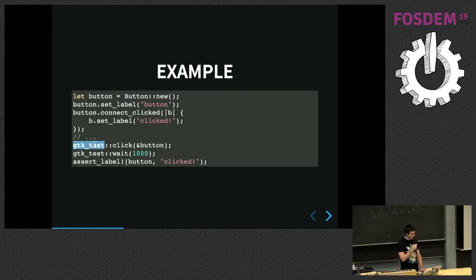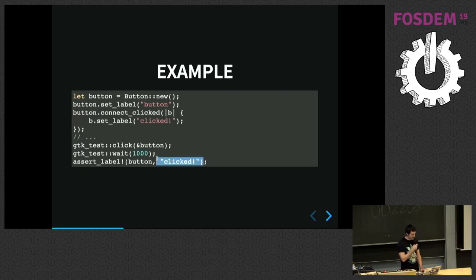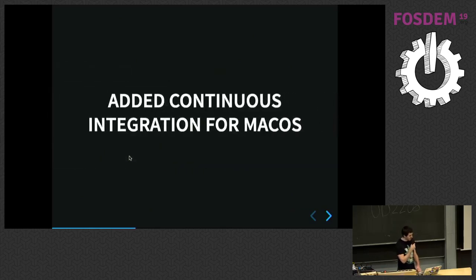With the gtk-test crate, you can send a click event to your button. Since we don't know what kind of server is running the test, we wait a second to be sure the label has been updated, and then we check with a macro we added that the button label was updated correctly. We also added continuous integration for macOS, since we are supposed to support Mac as well — and since I'm mainly using Mac, it's nice too, thanks to Travis.